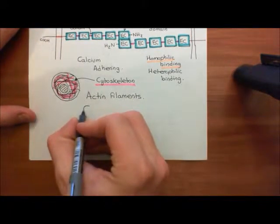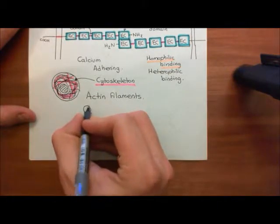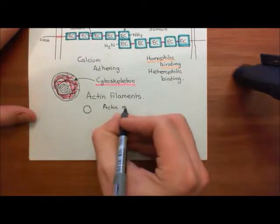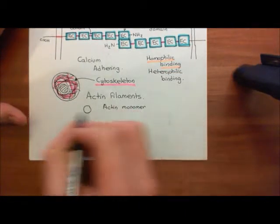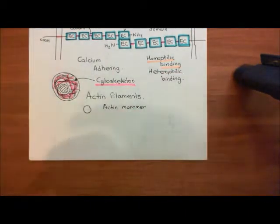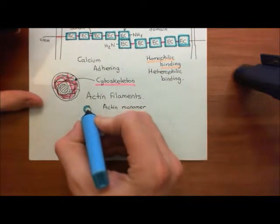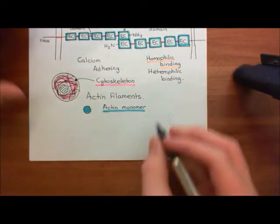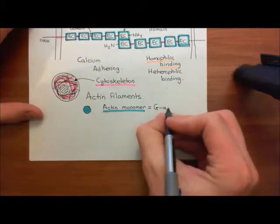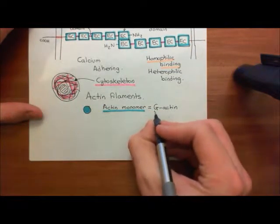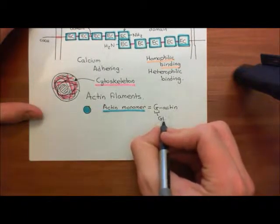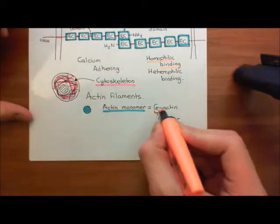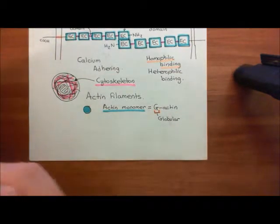Actin is a little globular protein. This little ball here represents an actin monomer. An actin filament is going to be a polymer of absolutely loads of actin monomers. Actin monomers, because they are a globular protein, are often called G-actin. So we could call this a G-actin molecule — the G stands for globular. G-actin just refers to the monomer of an actin filament, the little protein on its own.